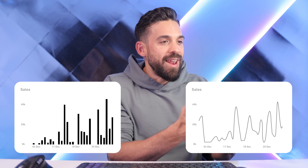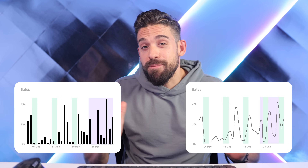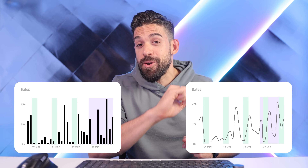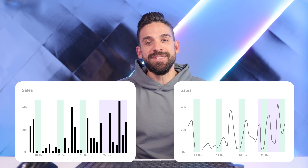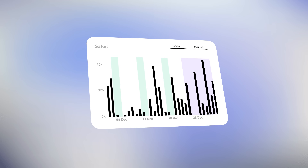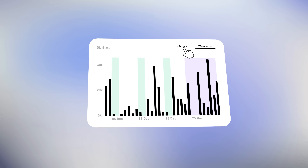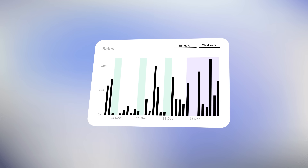Do you want to highlight certain periods on a line chart or a column chart to put your numbers into context? In this video I'm going to show you step by step how to set up these two examples and how to add buttons to your chart to let the user choose which custom periods should show. Now let's get started.